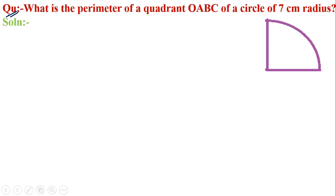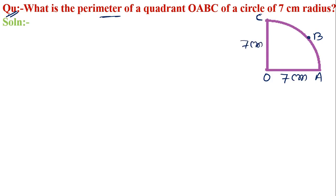Question: What is the perimeter of a quadrant OABC of a circle of 7 centimeter radius? Find the perimeter of quadrant OABC where the radius is given as 7 centimeters.